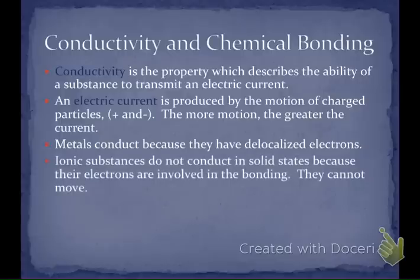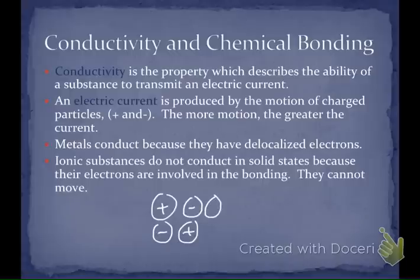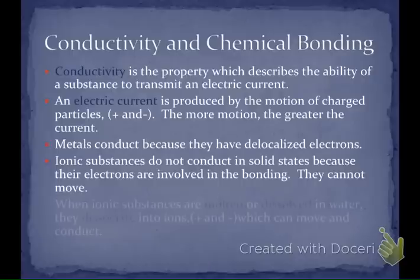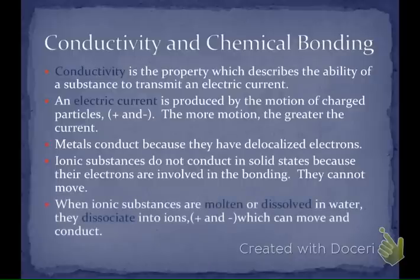Ionic substances can't conduct when they're in the solid state because all their electrons are involved in the bonding. We're not going to see motion of electrons with an ionic substance. When they're in a solid, all the positive ions are surrounded by negative ions and all the negative ions are locked into place by those positive ions. So we have all these charged particles but they can't move. In order for this to conduct, we have to do something to make those particles move — melt them, or if they're molten, or dissolve them in water. Then those charged particles will be able to come apart and form ions — cations and anions — and since they're in a liquid state, they'll be able to move around and conduct.